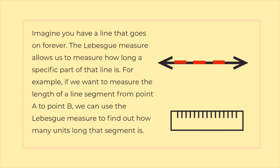Imagine you have a line that goes on forever. The Lebesgue measure allows us to measure how long a specific part of that line is. For example, if we want to measure the length of a line segment from point A to point B, we can use the Lebesgue measure to find out how many units long that segment is.